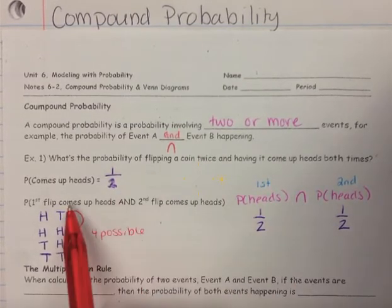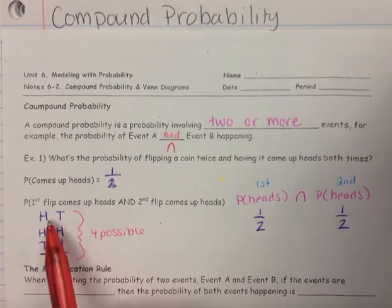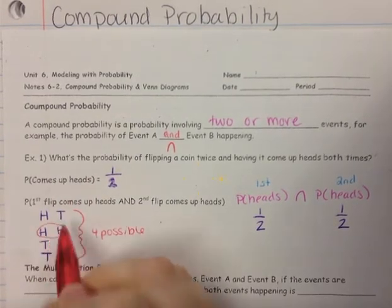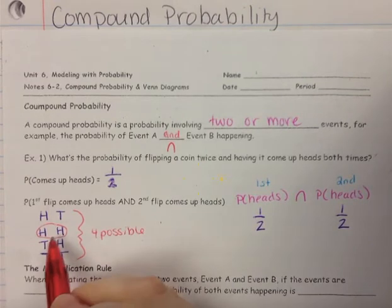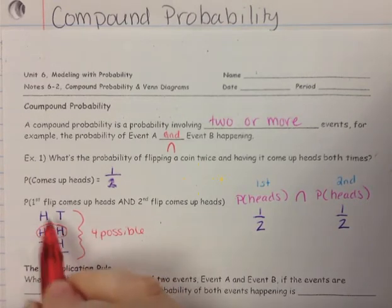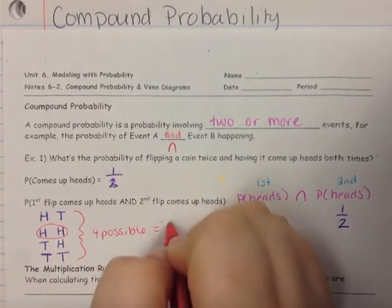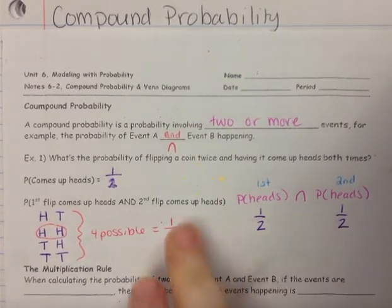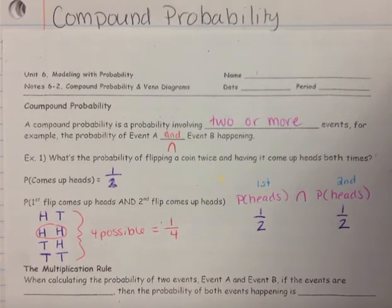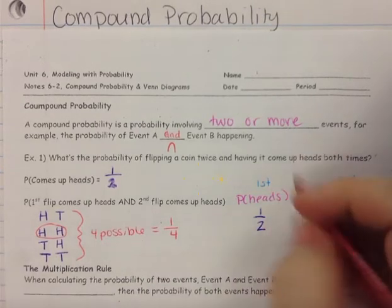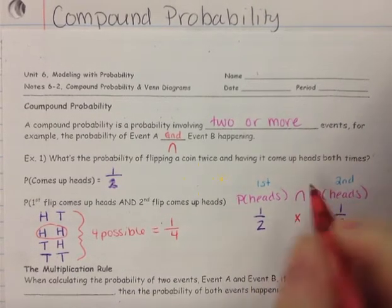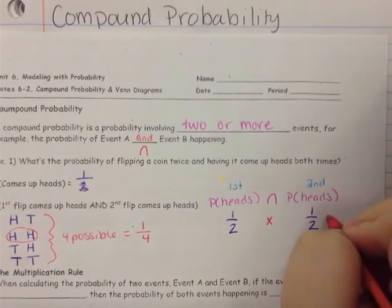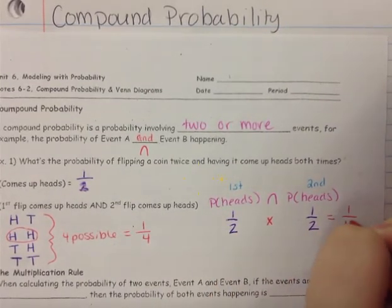There are four possible ways of this happening. But we want heads and heads — we want heads twice. So there's only one way out of the four possibilities. We know it's one out of four. How do we get one-half and one-half to give us one-fourth? You multiply — the 'and' means you multiply. So one-half times one-half is equal to one-fourth.